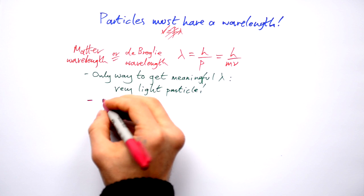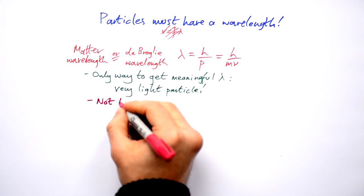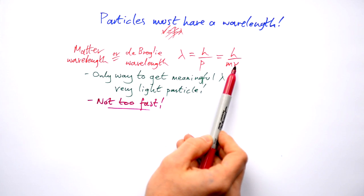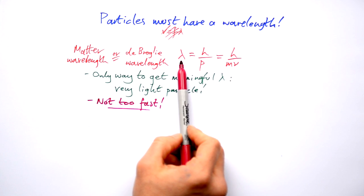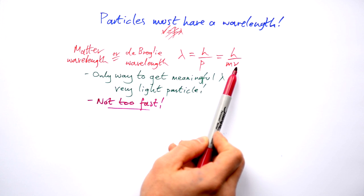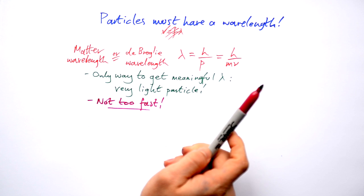Also we don't want them going too fast because if we have a very fast speed then we're going to make the wavelength very very small. Too small to do anything with it. Too small to see any meaningful diffraction. So when we fire electrons at our metal foil we want them going fairly fast that they go through but not too fast because otherwise the wavelength is going to be too small.